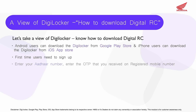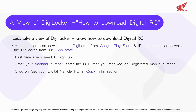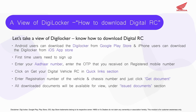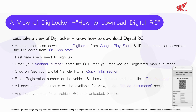First-time users need to sign up. Enter your Aadhaar number and enter the OTP received on your registered mobile number. Click on 'Get your digital vehicle RC' in the quick links section. Enter the registration number of the vehicle and chassis number, then click 'Get Document'.